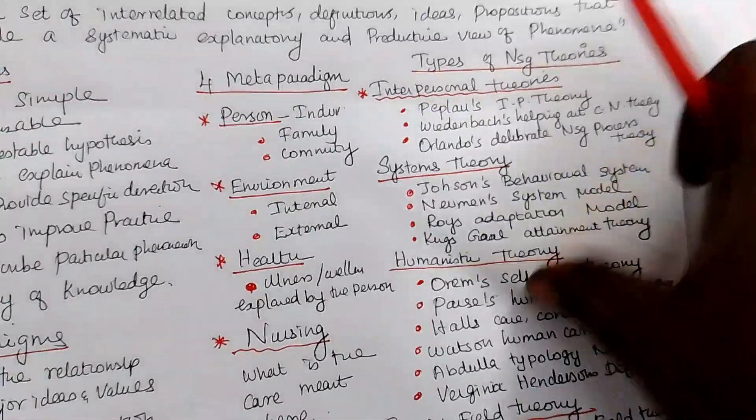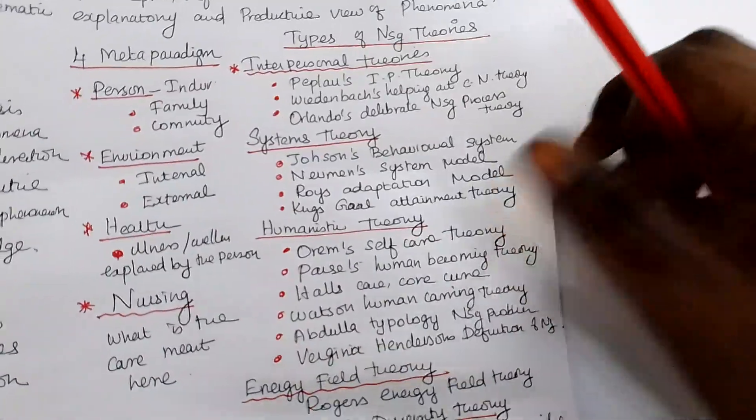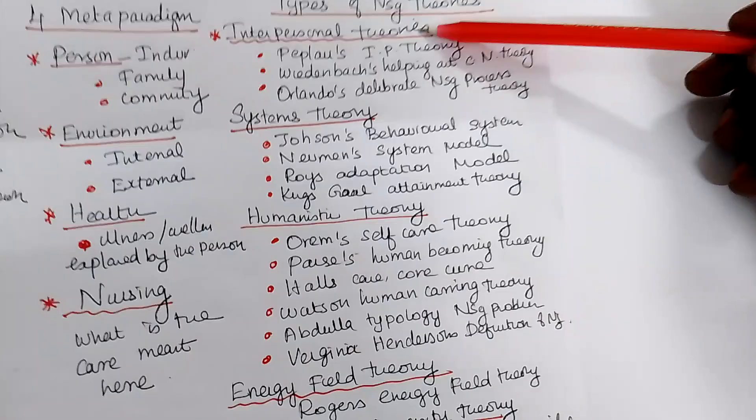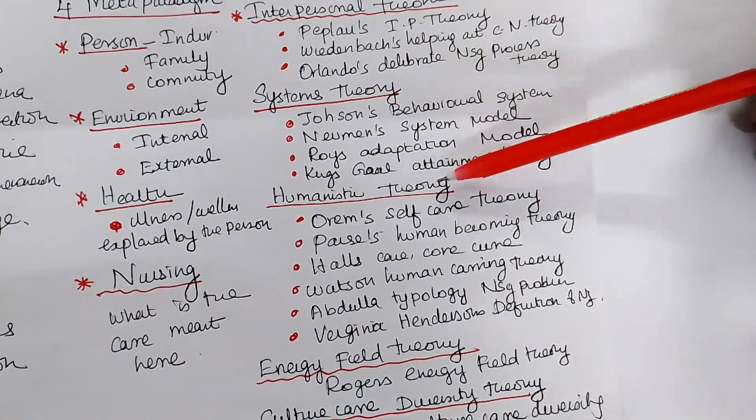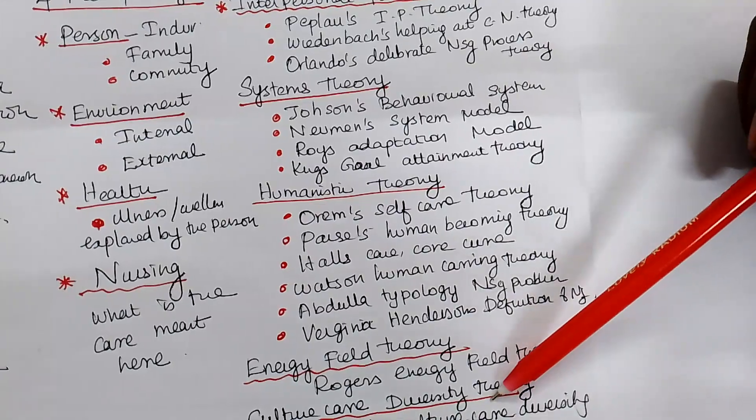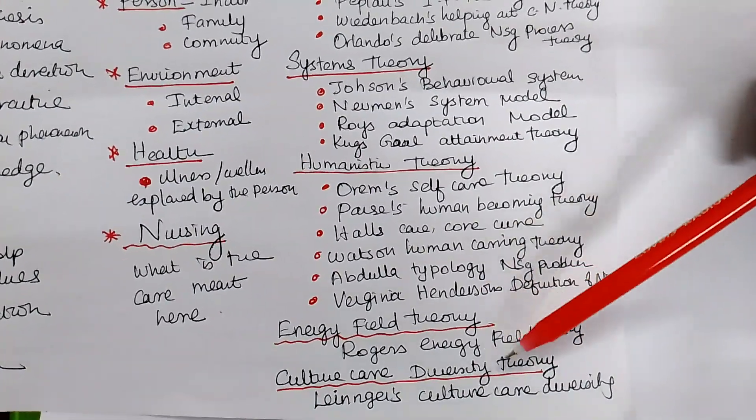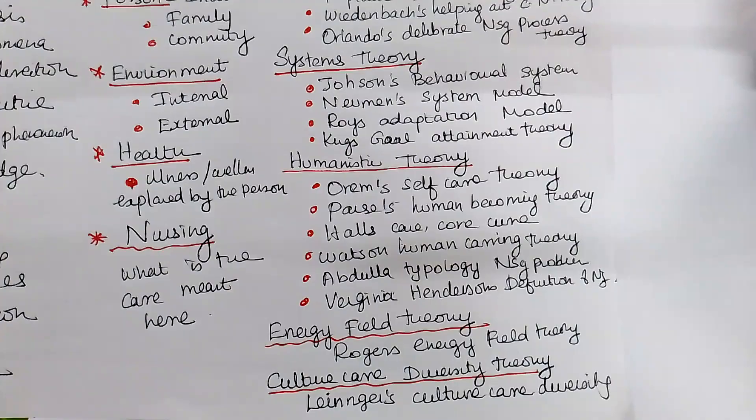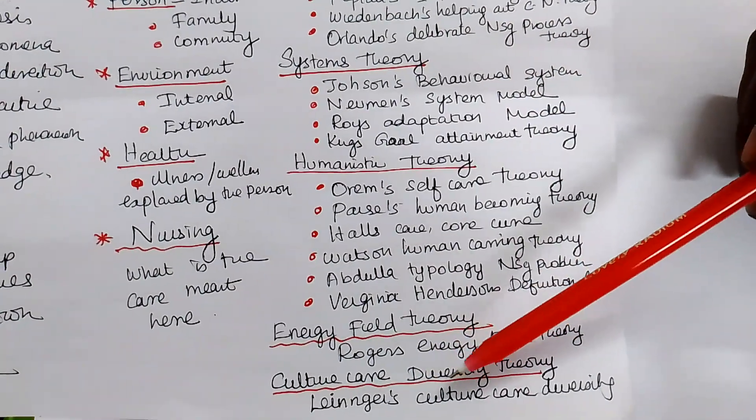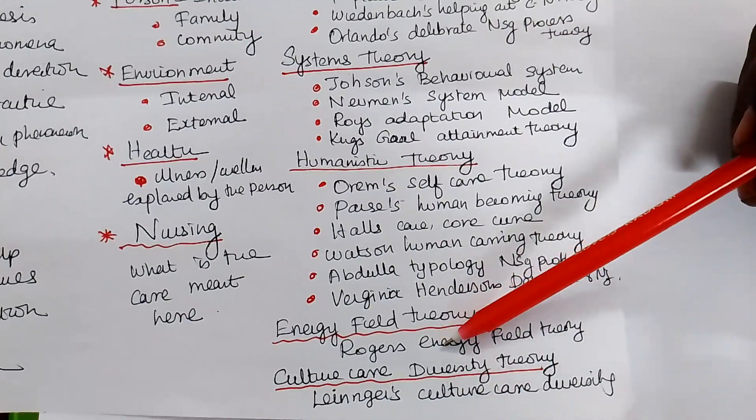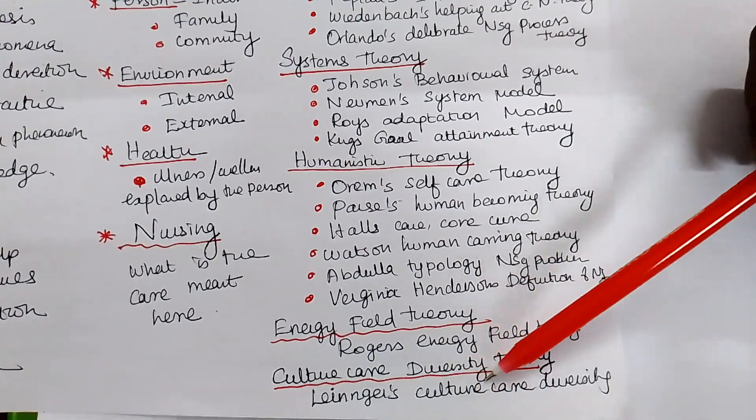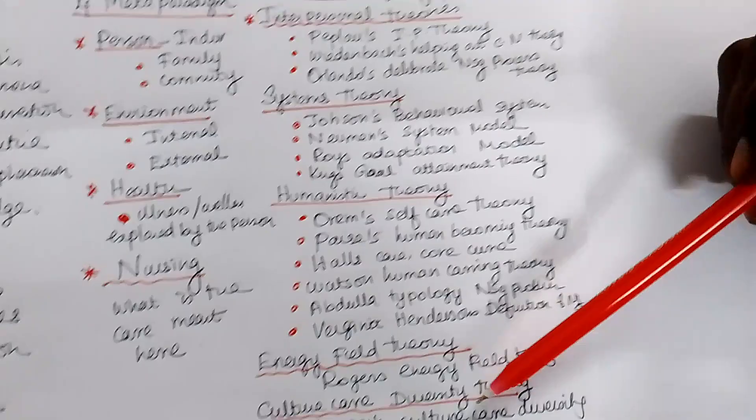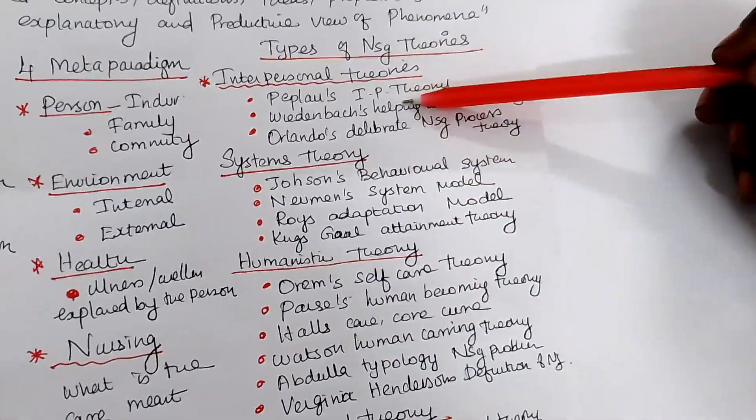In nursing, how the theory has been classified into it? So in nursing, we are classifying the theory into the types of theories: interpersonal theories, systems theory, humanistic theory, energy field theory, culture care diversity theory. Nurses are giving a culture-based care. You study in India, you go and give care in US or you study in India, you go to South Africa and giving care. The culture should not be a barrier. How to overcome the culture? How to go with accommodation, adaptation of the culture? Beyond the culture, nurses are giving care. So these theories are really helpful for the nurses to give the culture-based care.